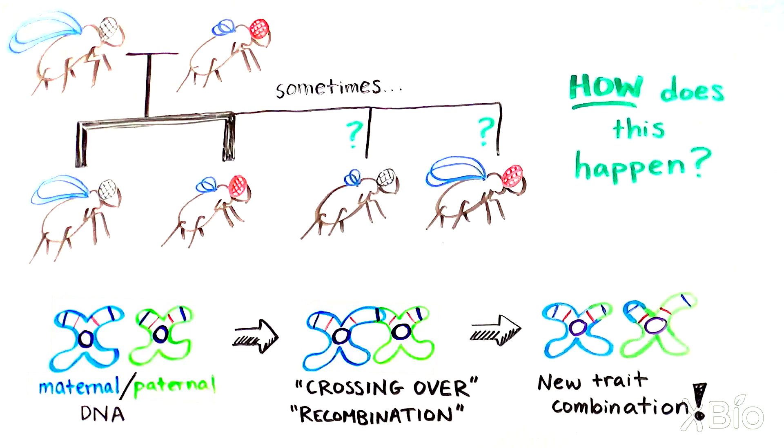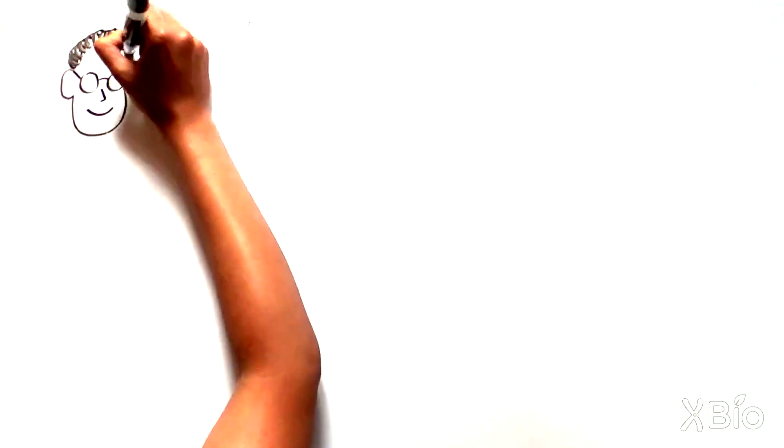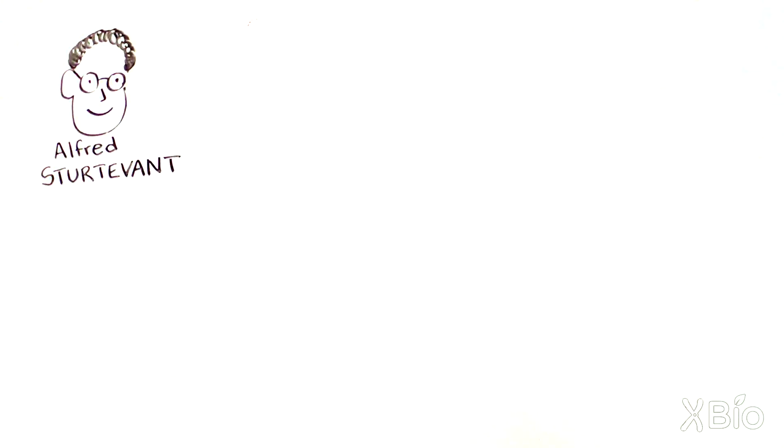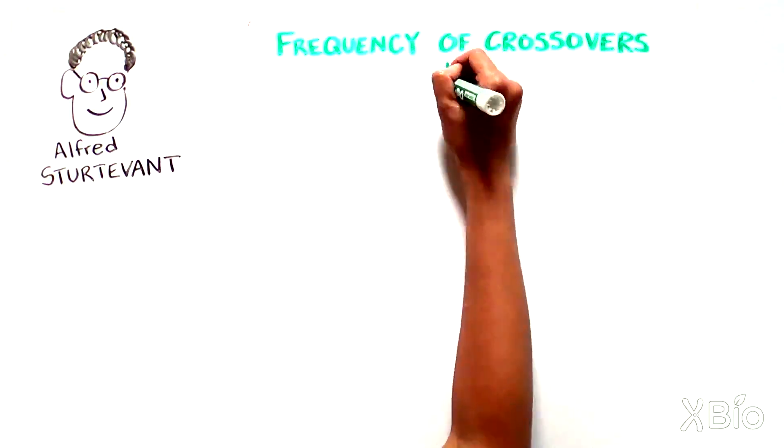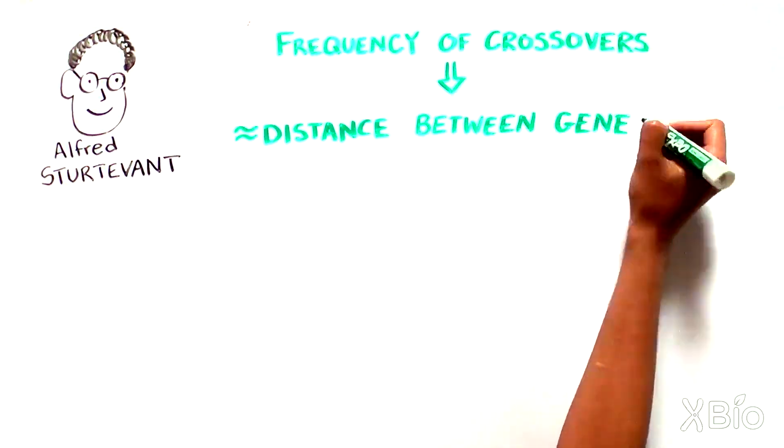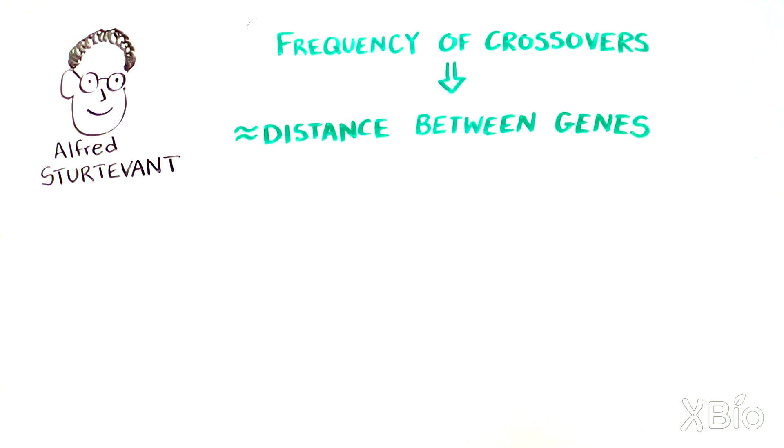So what does this have to do with maps? Morgan's student named Alfred Sturtevant reasoned that the frequency of crossover could be used to infer the approximate distance between genes on a chromosome. And if we know distance between genes, we can make a map.